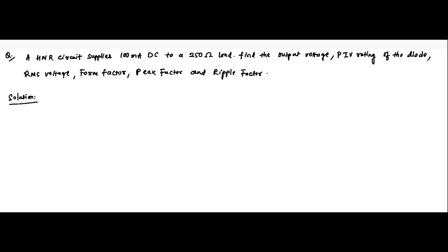Hello friends. Here is another question on a half wave rectifier circuit. The question is that a half wave rectifier circuit supplies 100 milliampere DC current to a 250 ohm load resistance. There are certain parameters which we are asked to find: the DC output voltage, the peak inverse voltage rating of the diode, the RMS value of the voltage, the form factor, the peak factor, and the ripple factor.